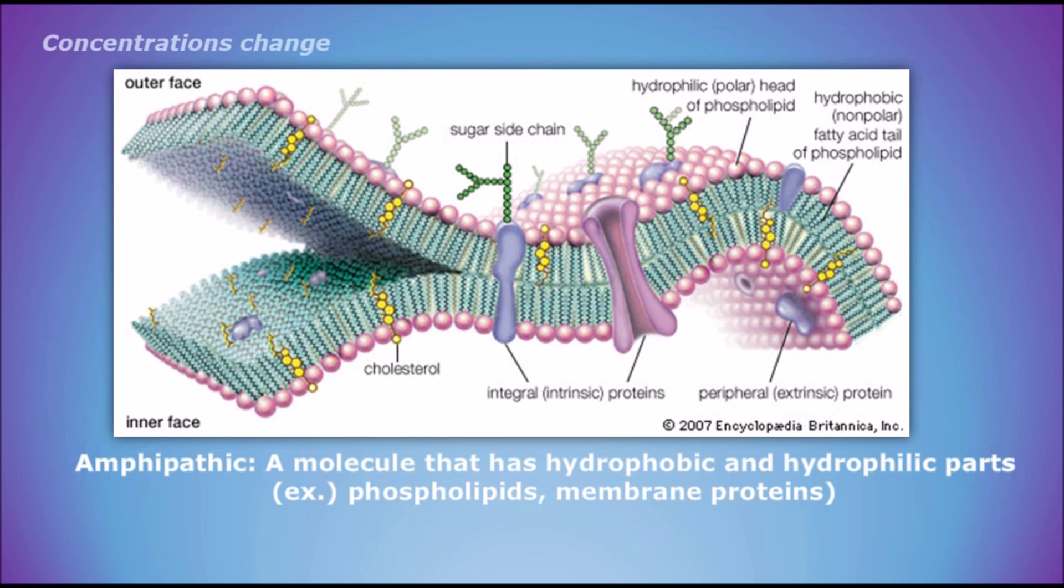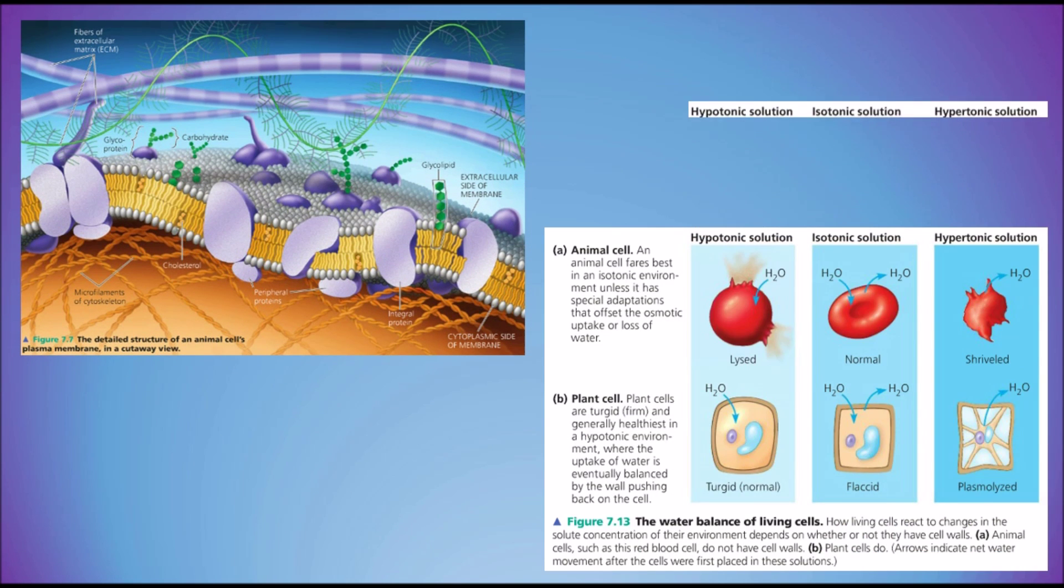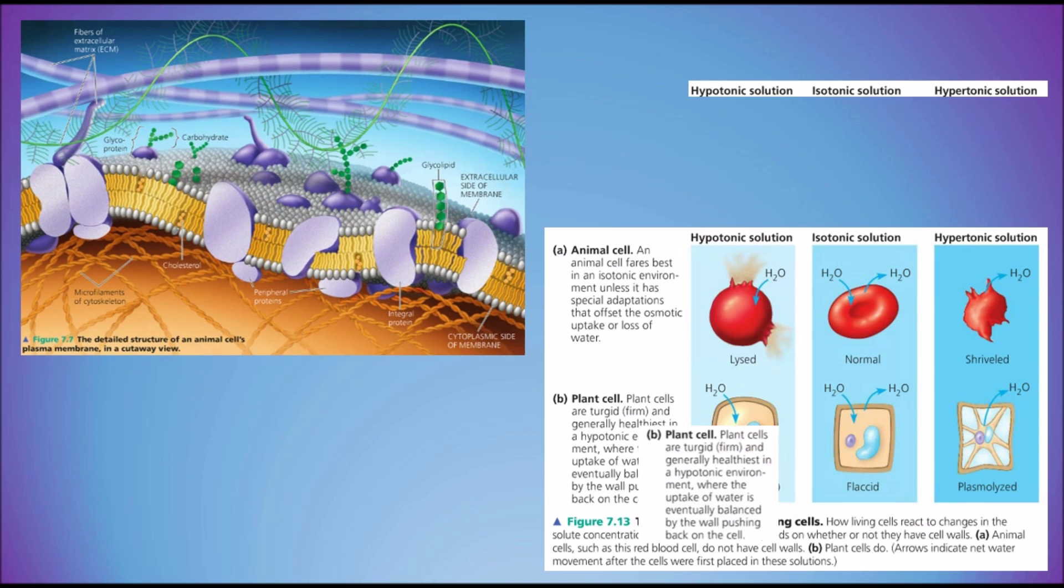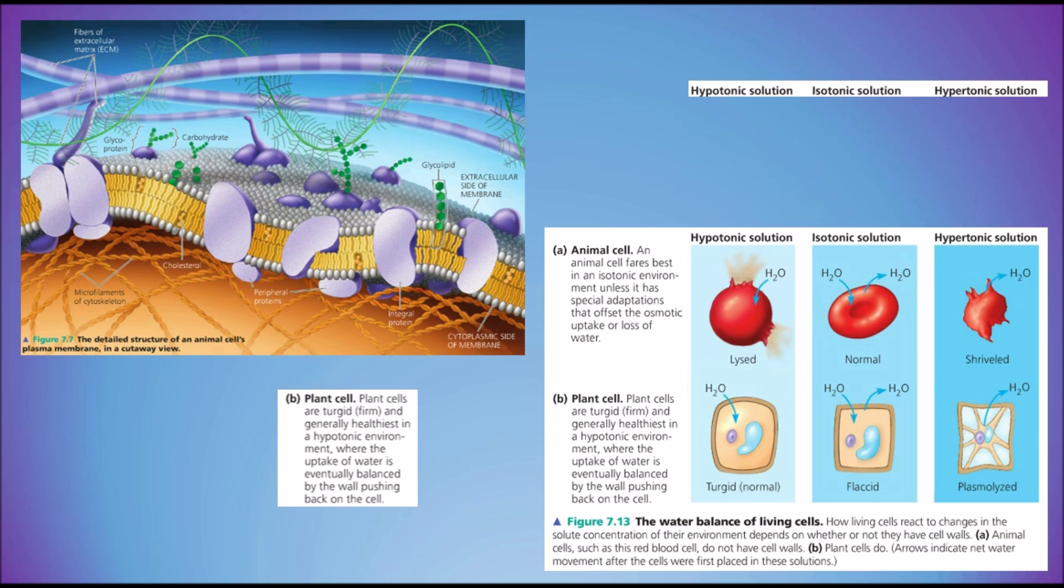Concentrations change in the cell membrane. Hyper-hypo-iso tonicity with the cell membrane. Plants like hypotonic, keeps turgid that cell membrane.